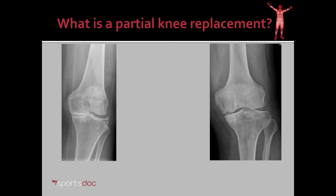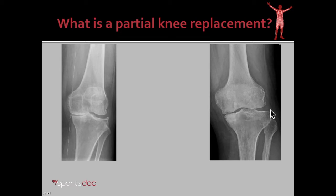So what is a partial knee replacement? Here we have x-rays from two different patients. On the left we have tricompartmental arthritis of the knee, so the medial, lateral, and patella compartments are all affected. On the right x-ray we see isolated arthritis of just the medial compartment of the knee, leaving the lateral compartment, the patella, and the ACL and PCL normal.